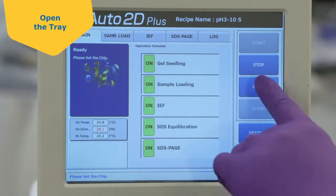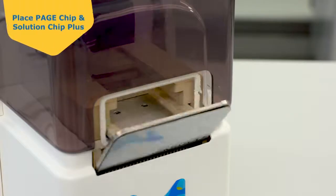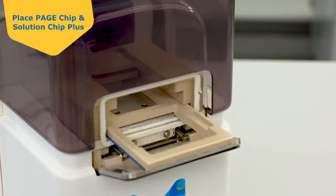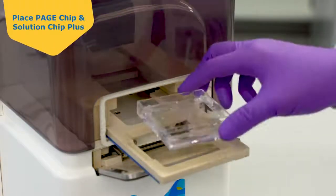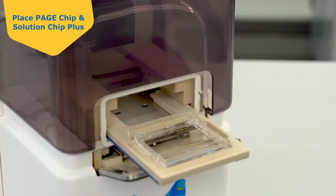Touch the Open button and OK on the screen to open the tray. Set the PAGE chip into the tray with the anode side towards the front. If the PAGE chip is inserted incorrectly, it will not sit flush in the tray.